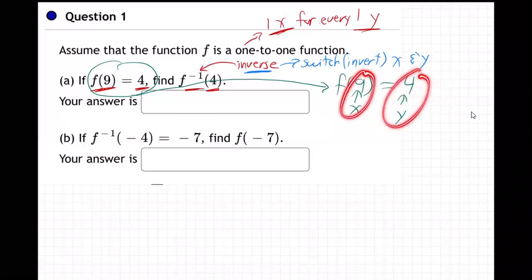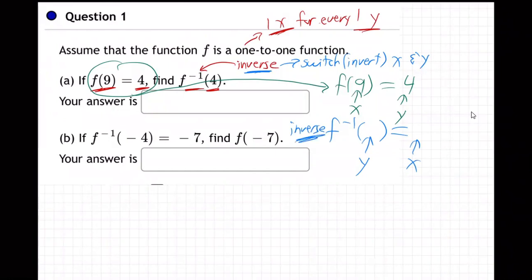This is always x, this is always y for a regular function. But now, for the inverse function, it's exactly switched. This will be y and this will be x because it's inverse. This is inverse here, and this one up here is regular.